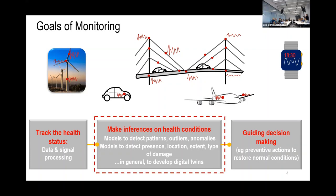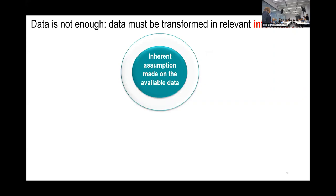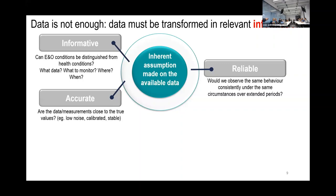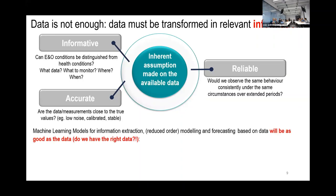All inferences come from data, so let's talk about data. Data is not enough. If someone tells you all you need is data, data is never enough. Data should mean information — if the data is not informative, you cannot use it. Every time we say we have data, we are saying the data is informative, accurate, and reliable. Everything that we build using machine learning will depend on the data we have. In civil and mechanical engineering, we will often not be able to observe all the possible states of our structure.